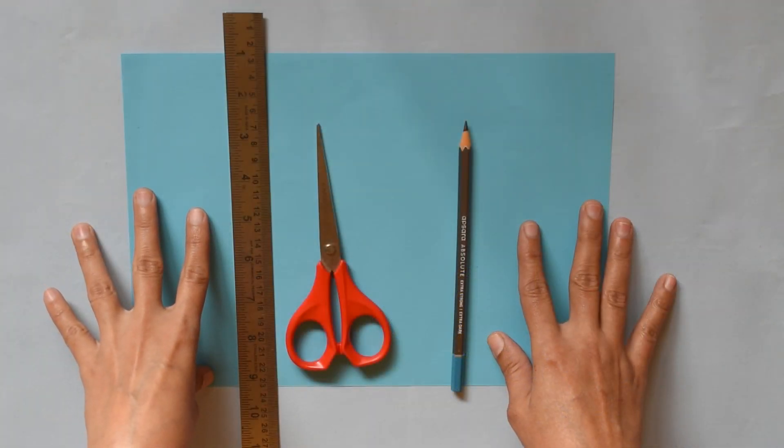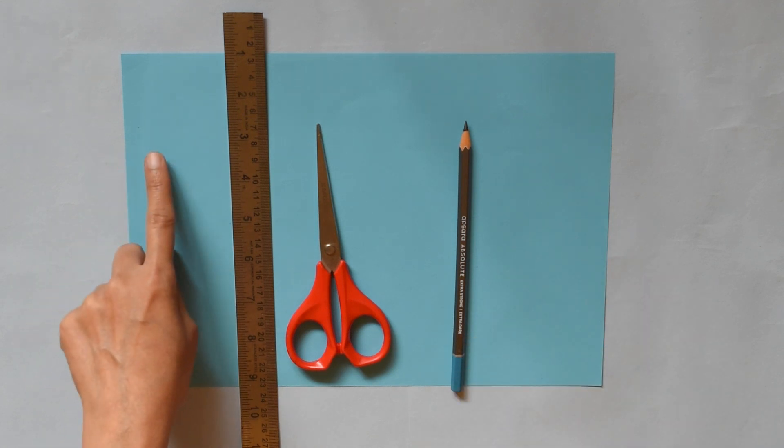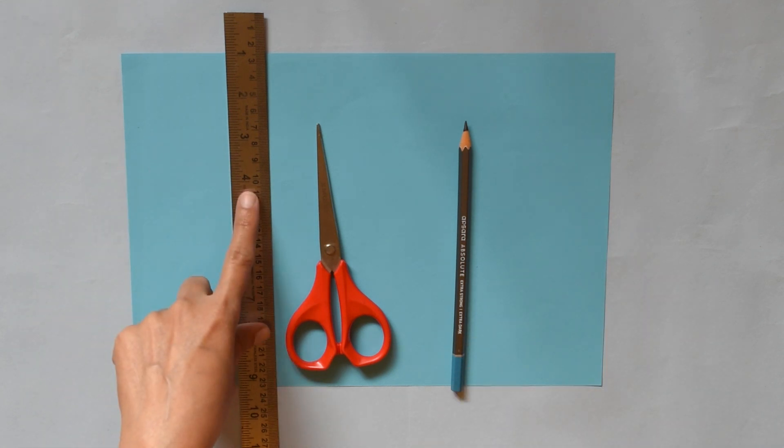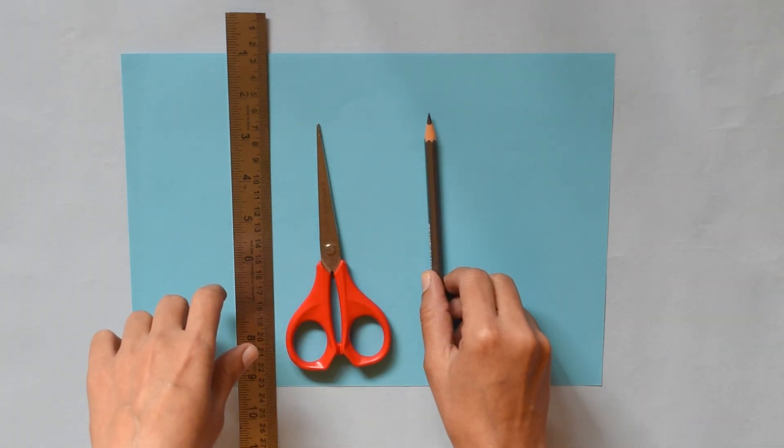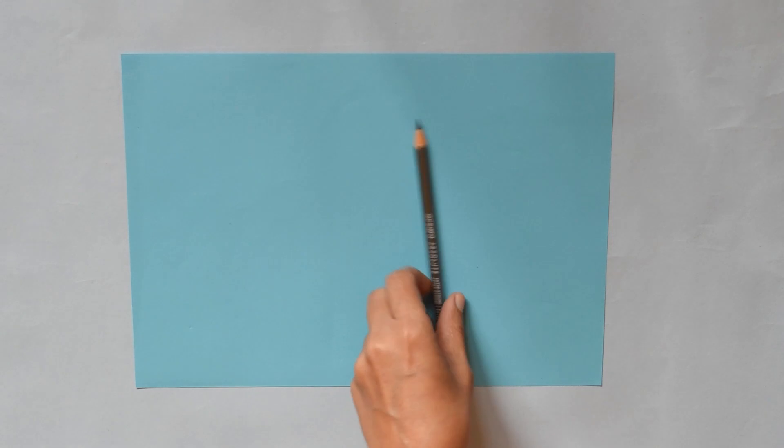For making the fan, we need one A4 size paper, one scale, scissor, and pencil. Now what we are going to do. This is your A4 sized paper.